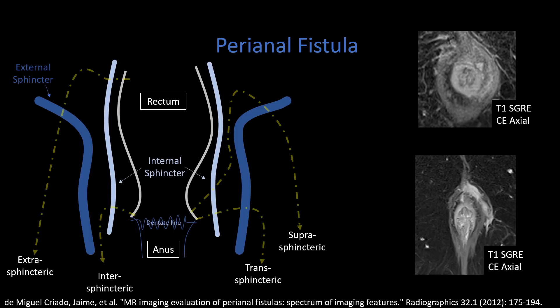Perianal fistula are a separate manifestation of Crohn's disease — certainly a form of penetrating disease and a very common, potentially morbid form. There are a number of classification systems; I believe this is the PARC classification system, well described in a Radiographics article from 2012. For relevant anatomy, we have the rectum with the dentate line and the anus as the separating demarcation. The internal sphincter is embedded within the wall of the lower rectum and anus, followed by the intersphincteric space, and then the external sphincter.